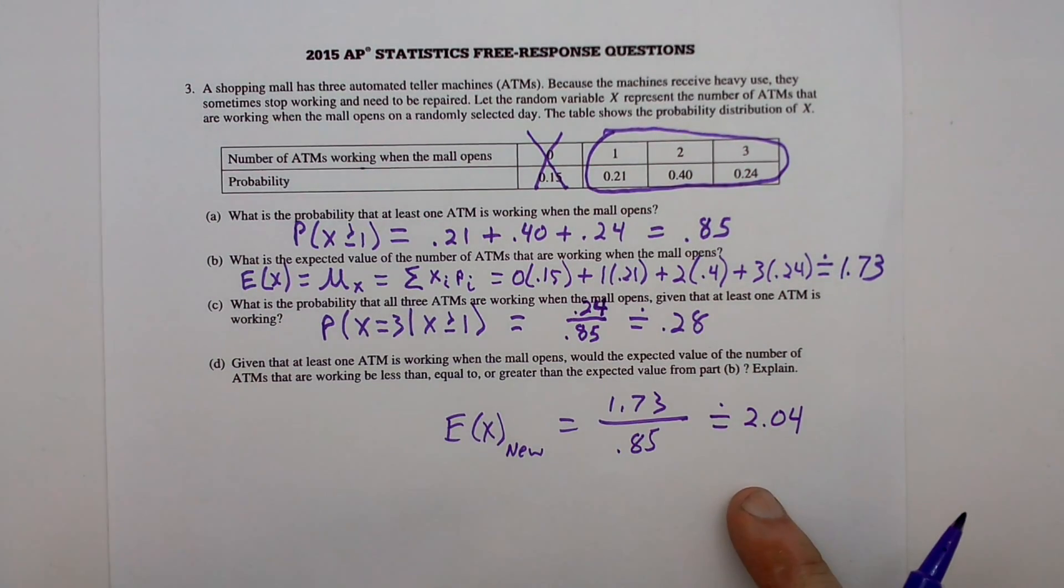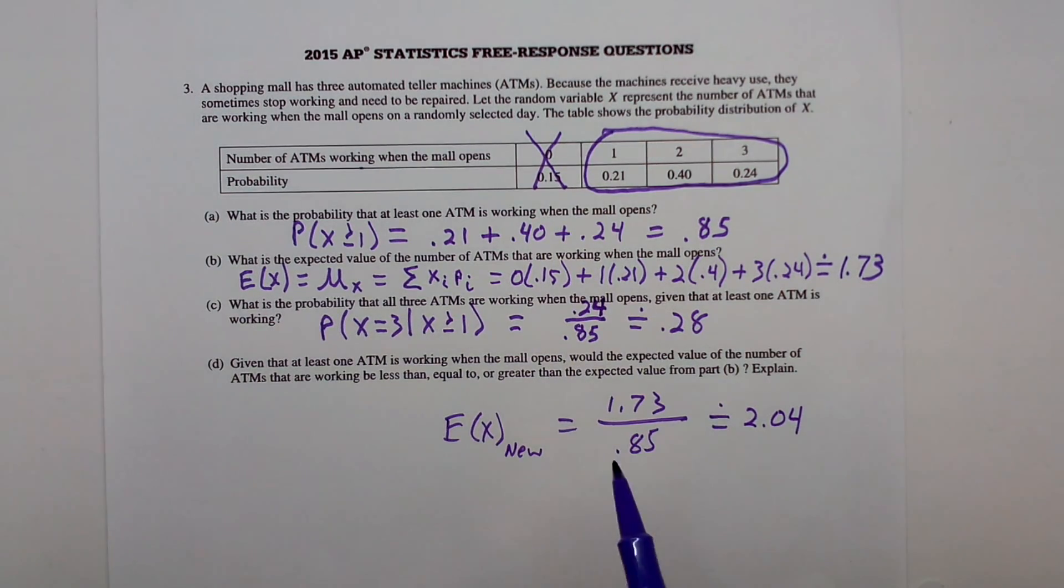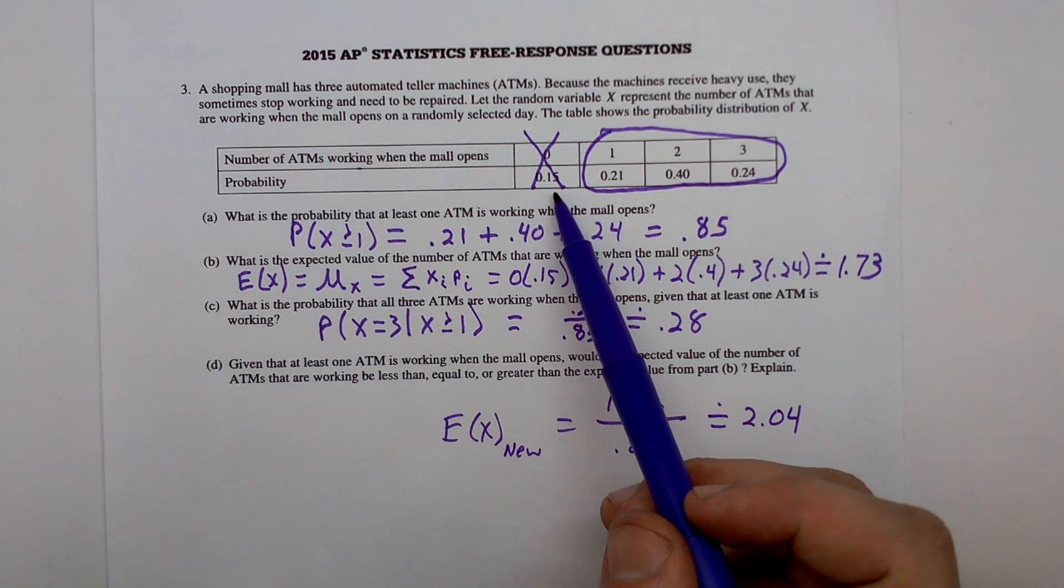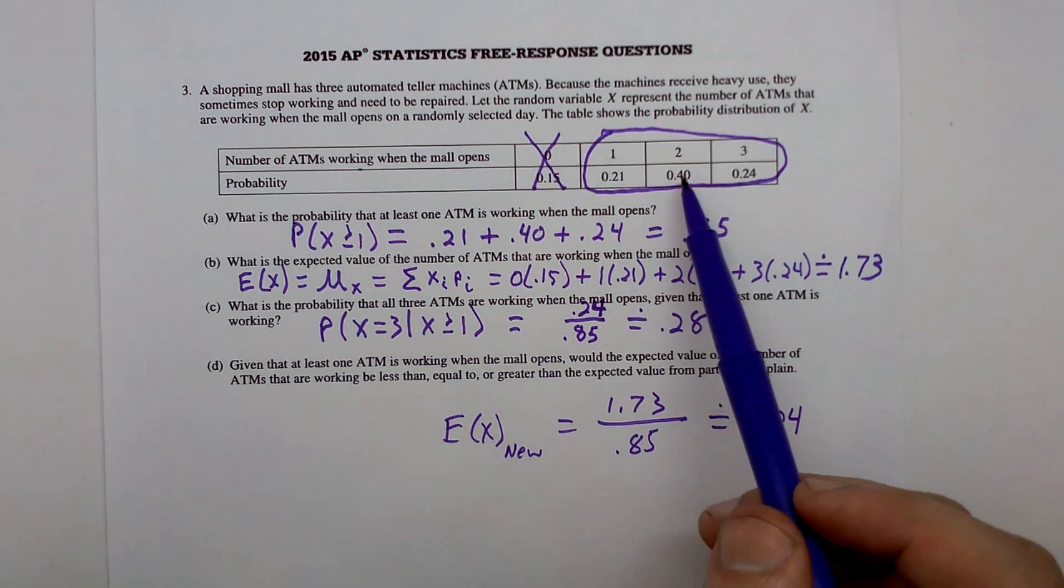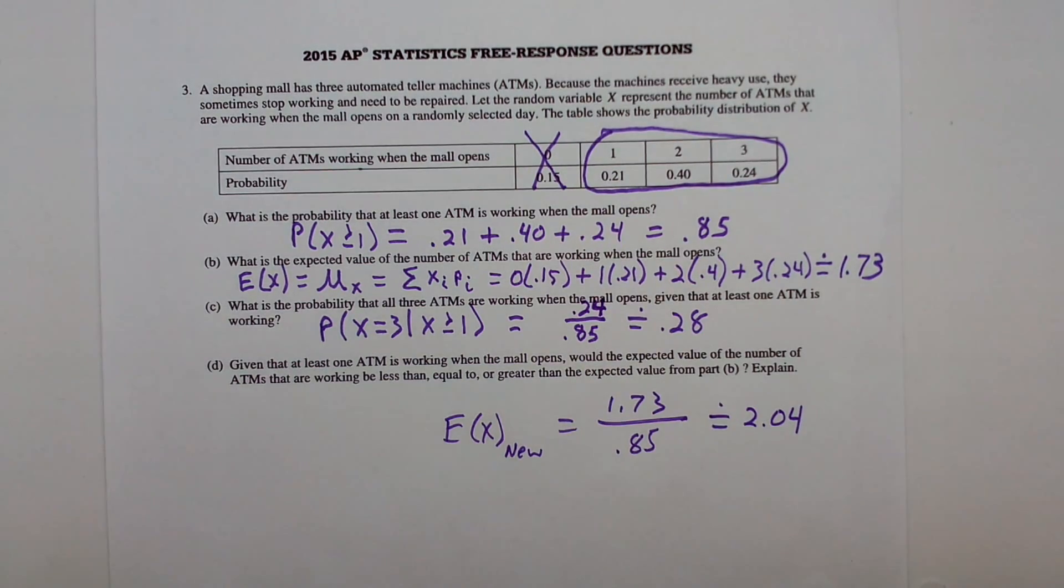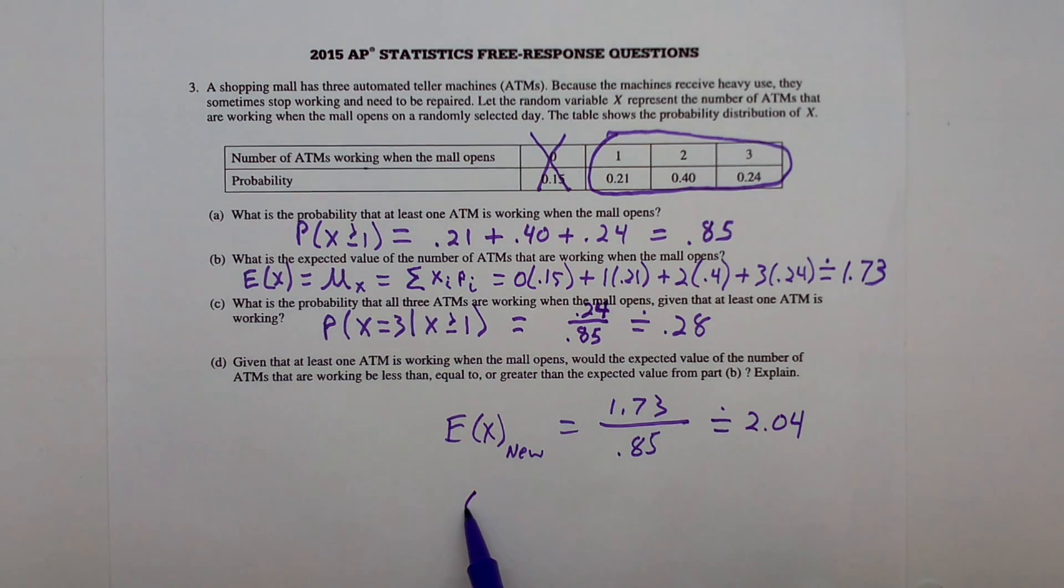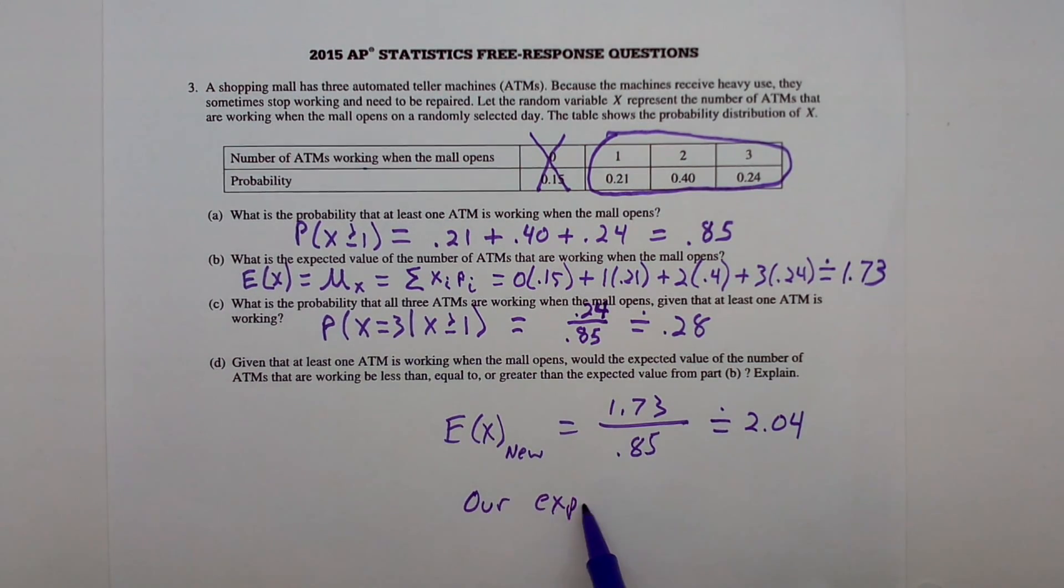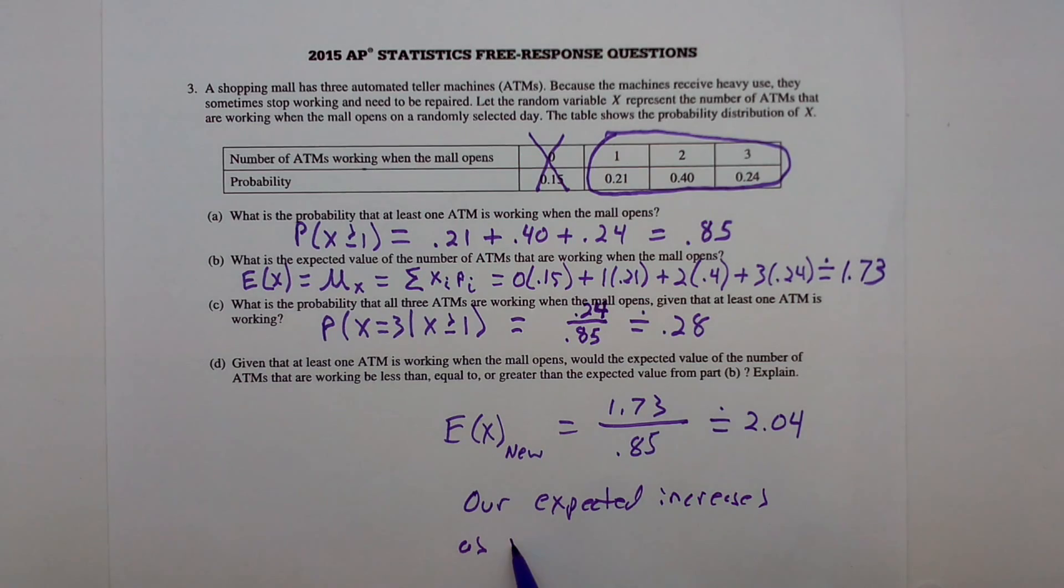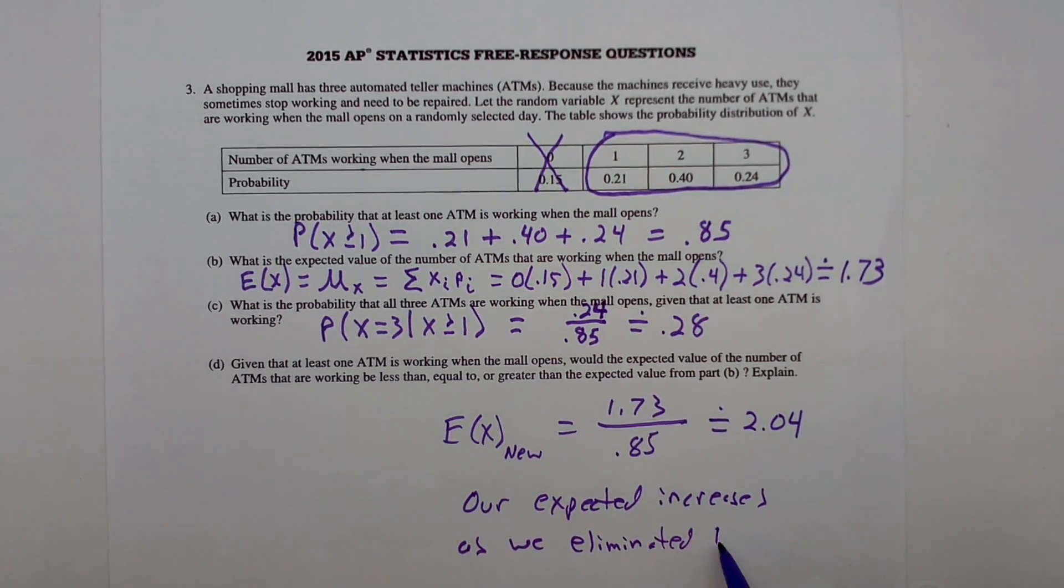And just intuitively, this makes perfect sense. Think about your grades. If you threw out all the zeros that you had, wouldn't indeed your average be higher? That's what we have here. 15% of our situation were zeros, 21% were ones, 40% were twos, 24% were threes. When we're throwing out that 15% of zeros, naturally, our expected value would be higher.